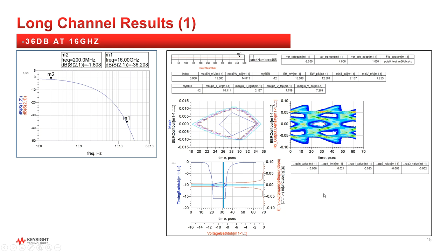Finally, at long channel minus 36 dB, we see the eye closure just outside the PCI Express Gen 5 eye mask. DC gain is much stronger at minus 13, and the eye height at 19 millivolts, which is well above the 15 millivolts pass fail limit.